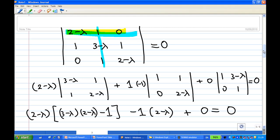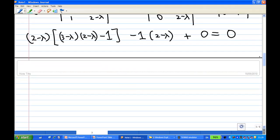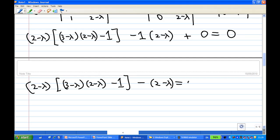So we're going to solve this equation. Let's repeat this equation again: (2-λ) times [(3-λ)(2-λ) - 1] minus (2-λ) equals 0.